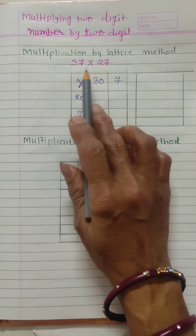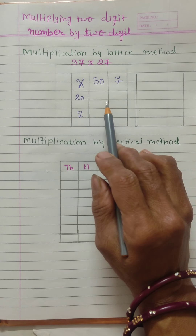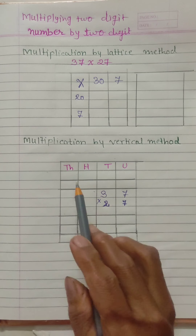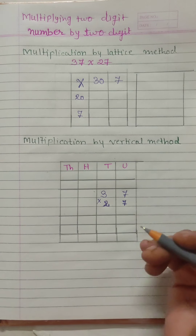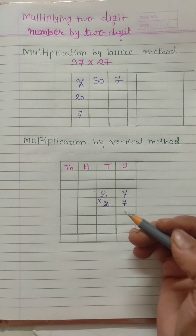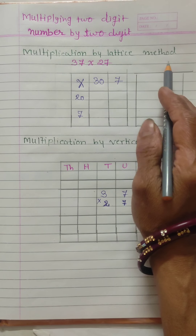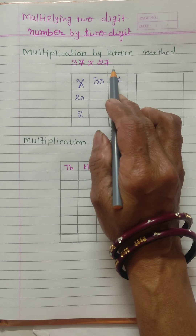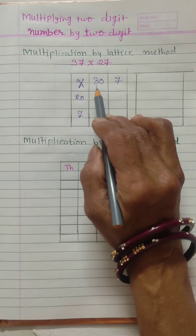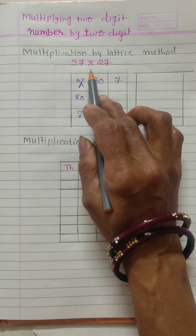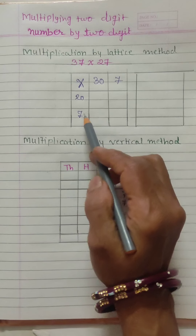First of all we will do this multiplication by the lattice method. We will start our first method: lattice method. 37 multiplied by 27. In this method we are writing 30 and 7 separately — 3 tens so we are writing 30, 7 units so we are writing 7. And multiplying by 27, we will write here 20 and 7. We will start our multiplication from the unit place.